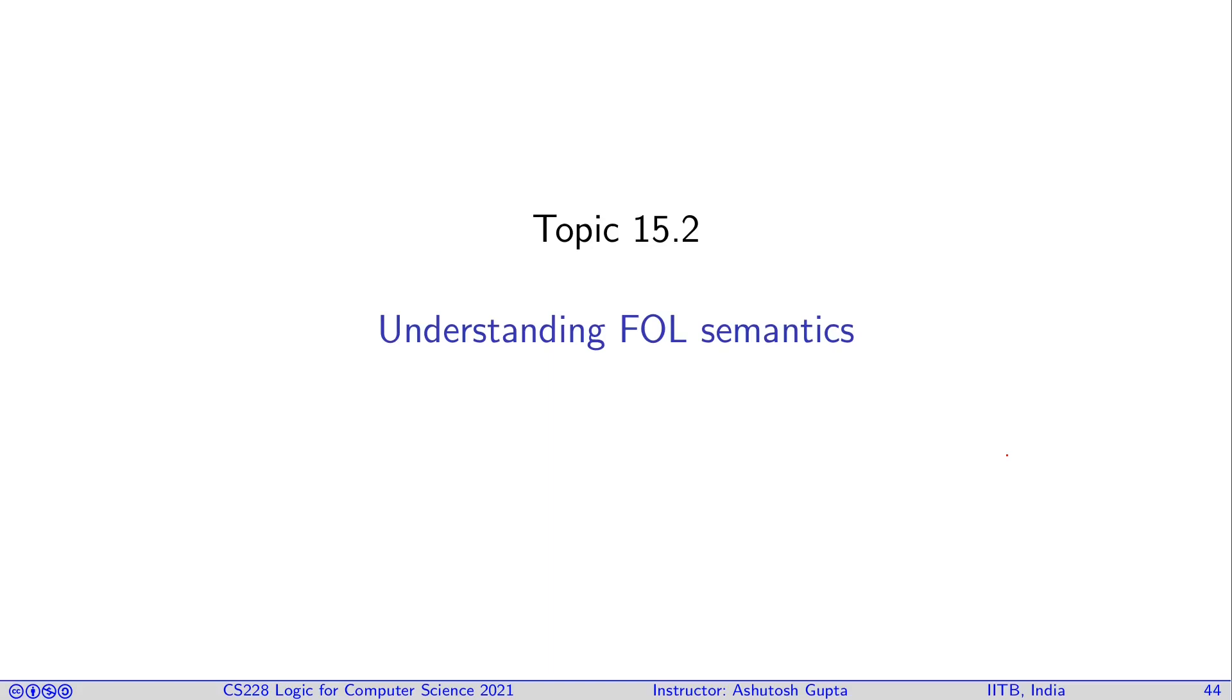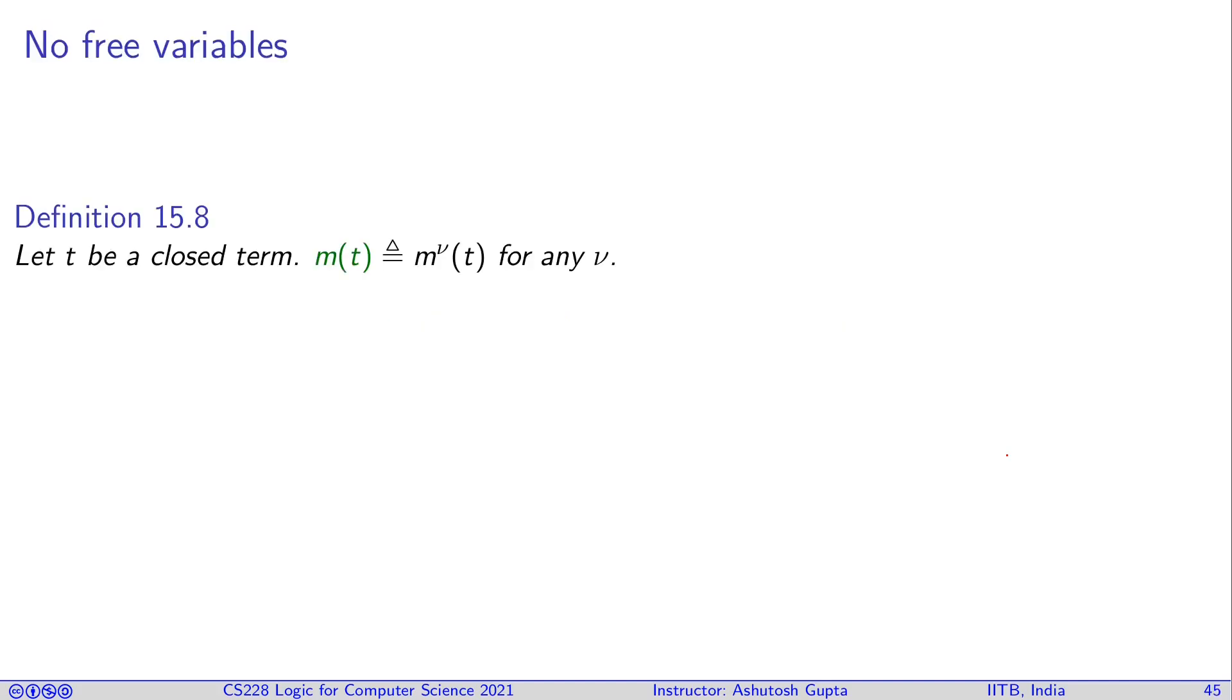Now we are going to understand a few points about FOL semantics. Let us suppose you have a term that is closed. If a term is closed, then the value assigned to the variables in the assignments are irrelevant. You can simply interpret the term using only the model. The model can give you the value of a term, so we may write m of t without actually stating the assignment if t is closed.